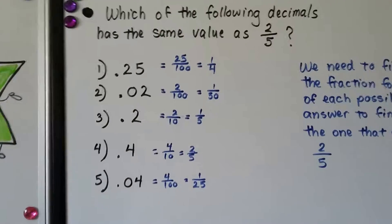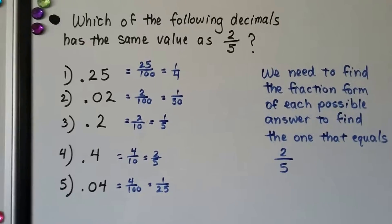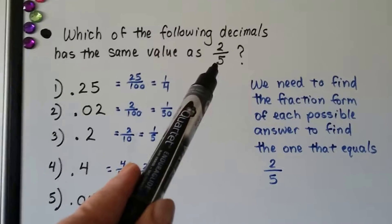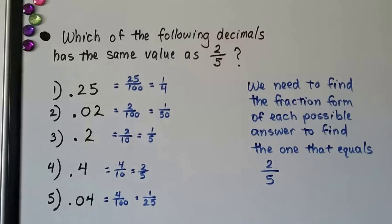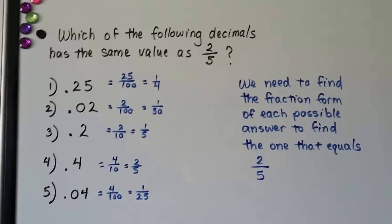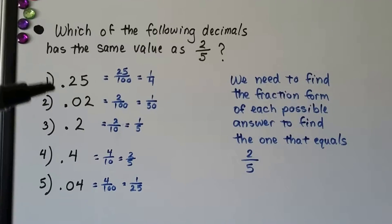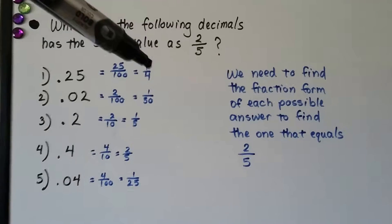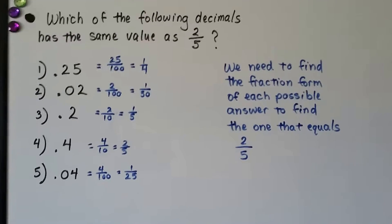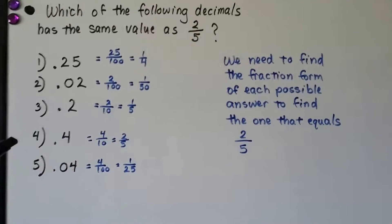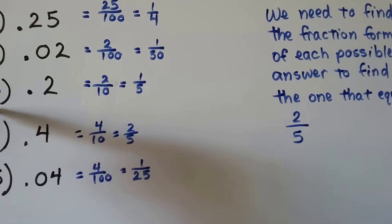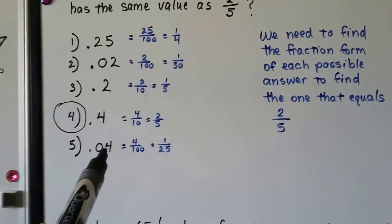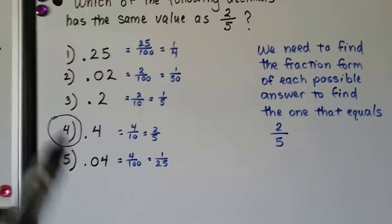Which of the following decimals has the same value as two-fifths? You can do this quickly by doubling: 5 times 2 is 10 and 2 times 2 is 4, so it would be four-tenths — 0.4. You could also find the fraction form of each answer: 0.25 is one-fourth, 0.02 is one-fiftieth, 0.2 is one-fifth, and 0.04 is one twenty-fifth. Four-tenths reduces to two-fifths, so number four — 0.4 — is the right answer.